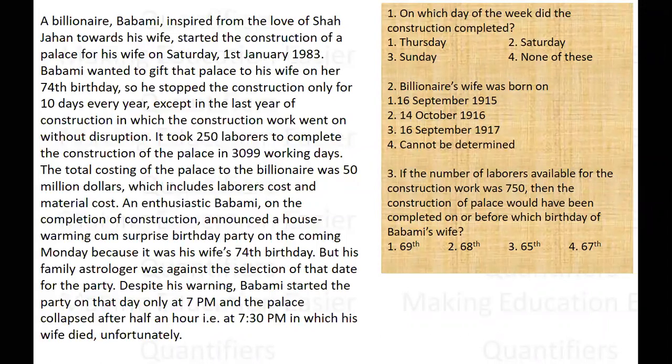A billionaire, inspired by the love of Shah Jahan towards his wife, started the construction of a palace for his wife on 1st January 1983. It was Saturday. He wanted to give the palace to his wife on her 74th birthday, so he stopped the construction only for 10 days every year, except in the last year of construction, in which the work went on without any disruption.